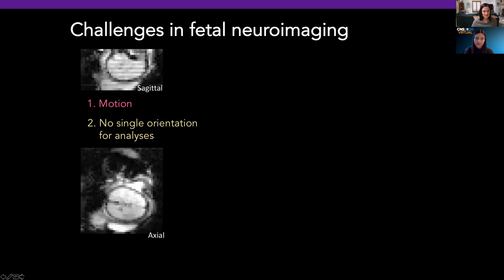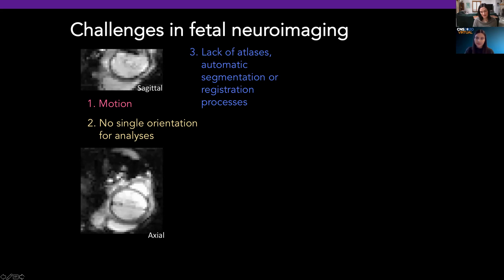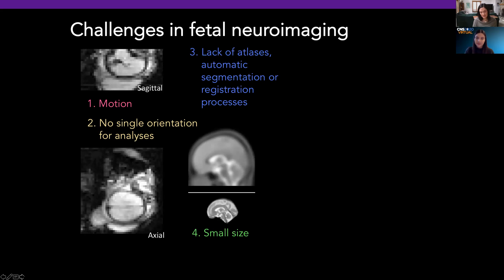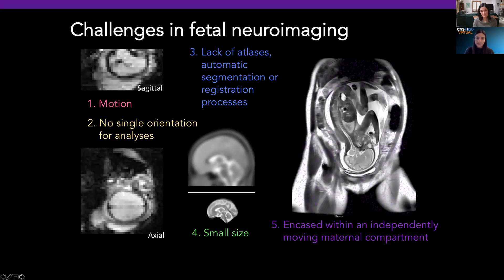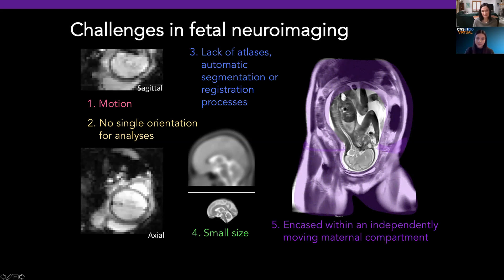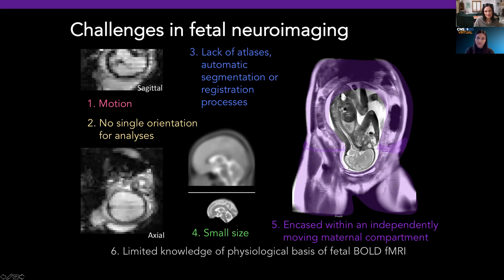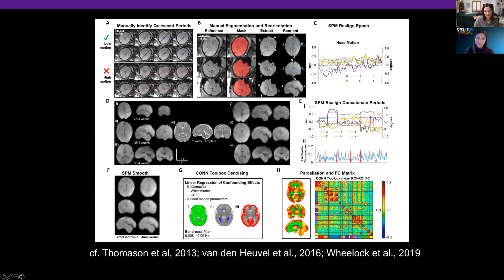But that's not the only problem. The fetus comes with no single imaging orientation for analysis. We lack atlases and automatic segmentation and registration processes, which makes the steps for analyzing the data rather labor intensive. Another issue is that the fetal brain is small, so the effective resolution of the images is quite different than studying adult humans. The fetus is also encased within an independently moving maternal compartment, which contributes noise to the images. And finally, we possess limited understanding and knowledge about the physiological basis of BOLD MRI.